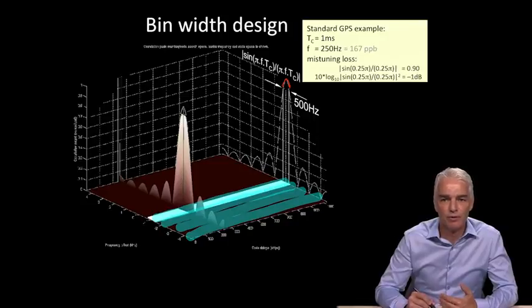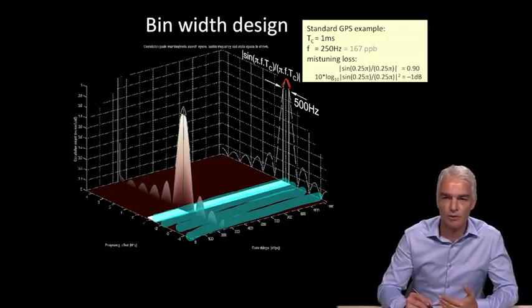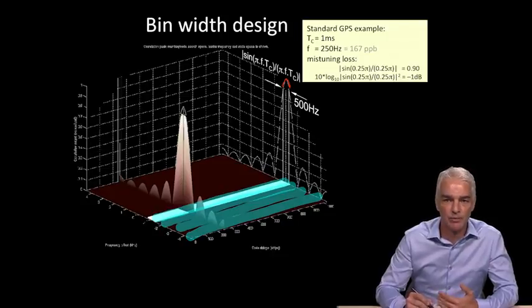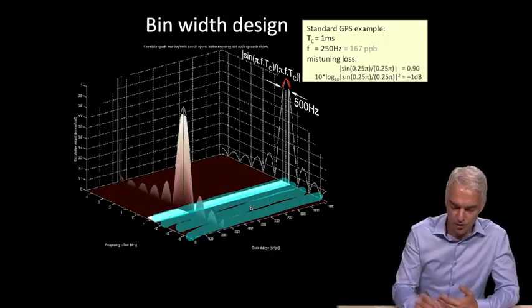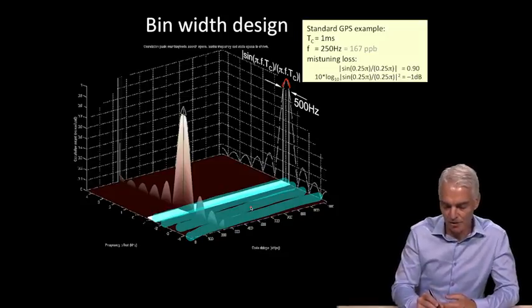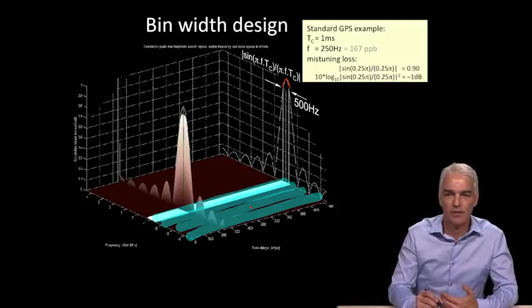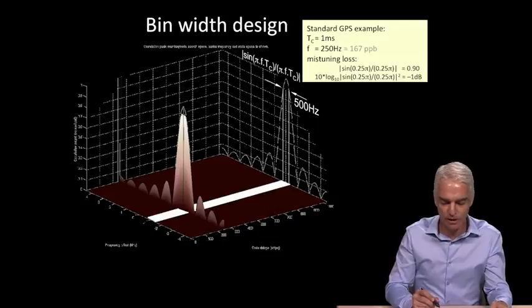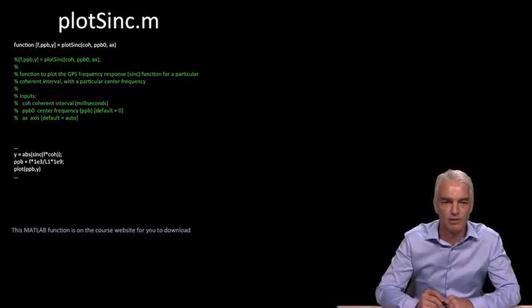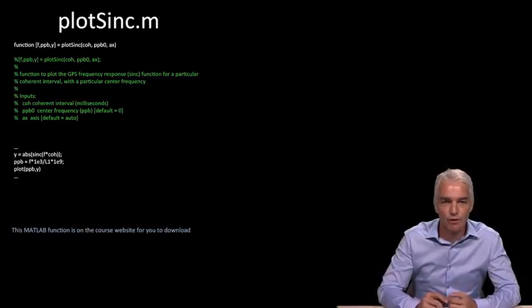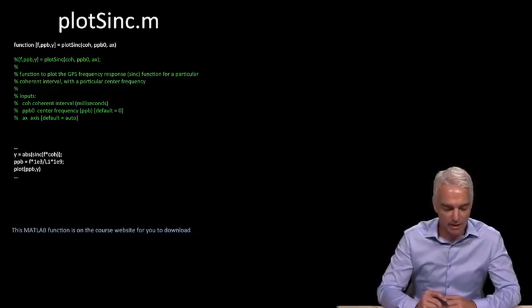What if you wanted to make those bins twice as wide, or if you asked yourself, what if I was prepared to give up 2 dB of sensitivity and search wider bins? Instead of doing this by hand, the way you do this is write yourself a function in something like MATLAB. This has been done for you, and there's this function called PlotSinc, which is on the course site.